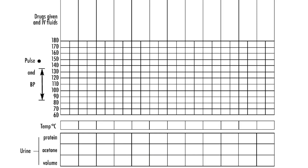Here we record the pulse and blood pressure of the mother. We use a dot to indicate the pulse, checked every 30 minutes to an hour. Blood pressure is checked about every 4 hours. Temperature is recorded whenever checked. As the woman is in labor, we continuously check urine — the volume passed, acetone (indicating acidosis), and protein. If urine output is less than 30 ml per hour, the woman may be dehydrated.